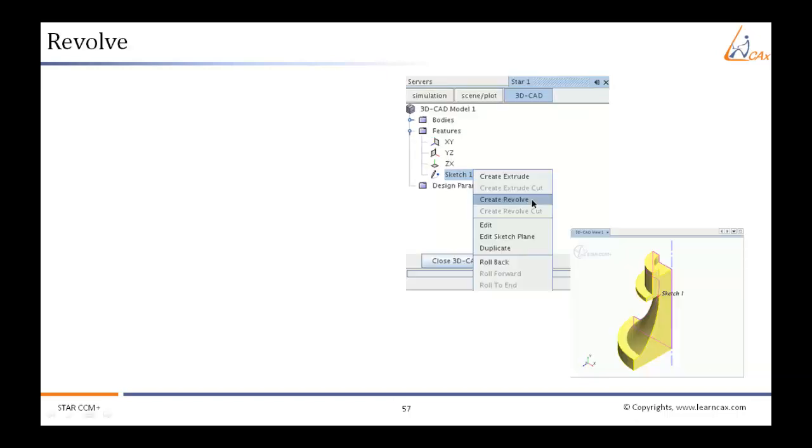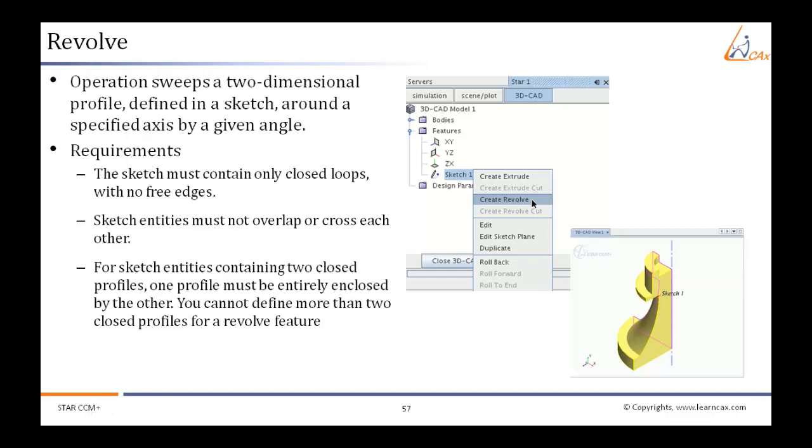Let us now look at the revolve feature in detail. This operation takes a sketch and revolves it around an axis. During revolution, whatever volume is enclosed is converted into a solid body.